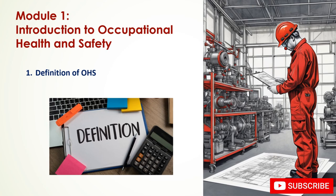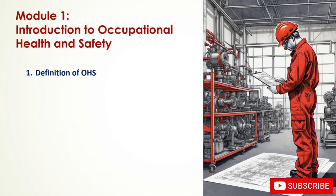OHS encompasses a wide range of factors that can affect workers' physical and mental health, including physical hazards such as noise, vibration, radiation, temperature extremes, hazardous substances, and ergonomic risks.